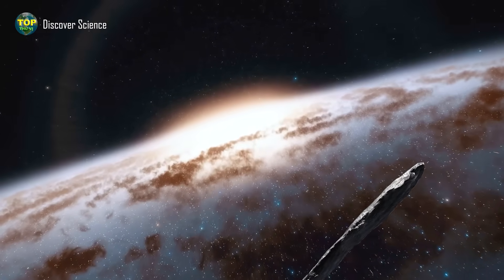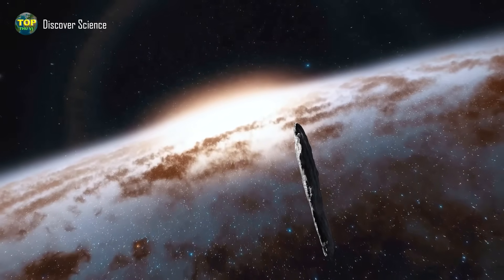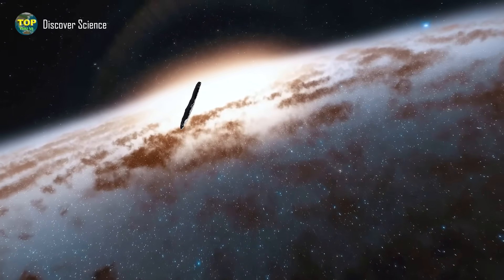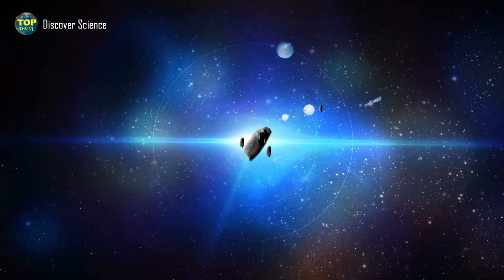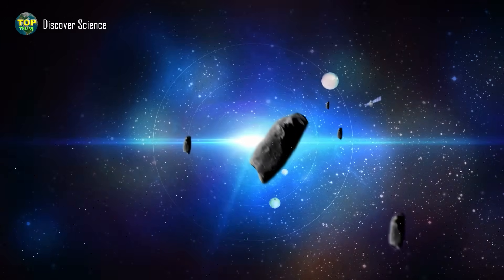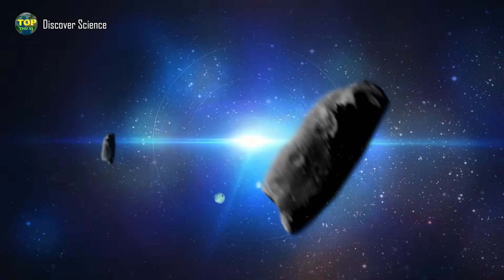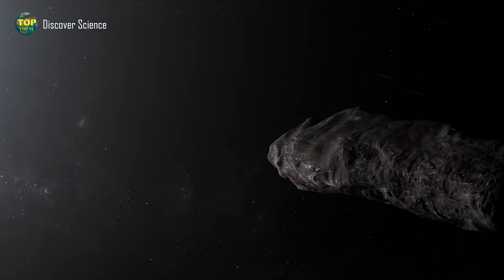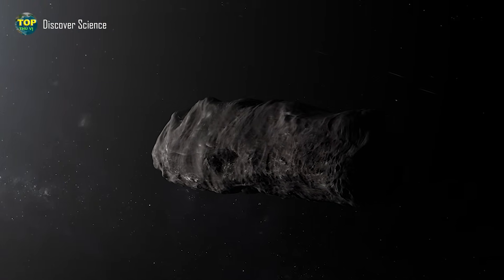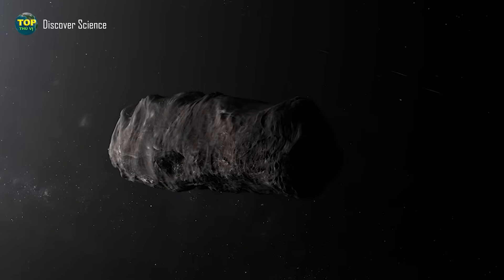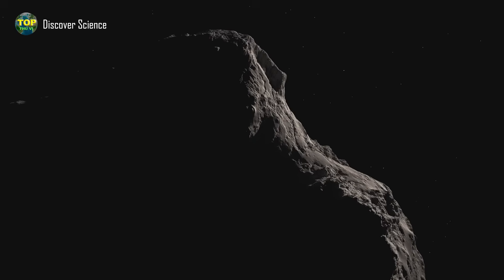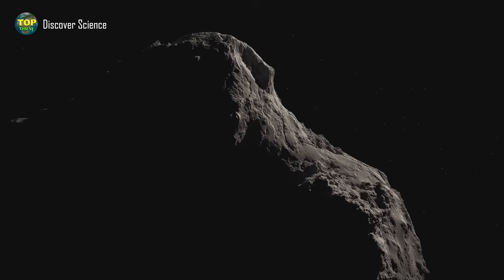To this day, the true nature of 'Oumuamua remains a mystery. However, scientists have noticed that 'Oumuamua's brightness changes by a factor of 10 every seven hours. No known asteroid or comet in our solar system exhibits such significant variations in brightness. This could be explained by the possibility that 'Oumuamua's surface is made of metal-rich rock, which has turned reddish due to exposure to cosmic rays over millions of years of traveling through space. This would make it completely barren, with no dust or water ice on its surface.